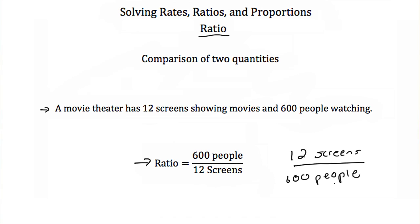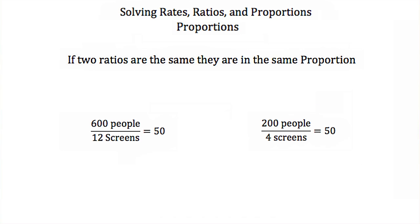So that's how you make a ratio. Now because ratios are in fraction form, if that fraction reduces to the same number, we say the two ratios are in the same proportion. So if our first movie theater had 600 people over 12 screens, well 600 divided by 12 is equal to 50. If we had a second movie theater that only had 4 screens and was serving 200 people, well 200 divided by 4 is also 50. So while these movie theaters are different sized and have different amounts of people, they each serve the same amount of people per screen — their ratios are in the same proportion of people to screens.